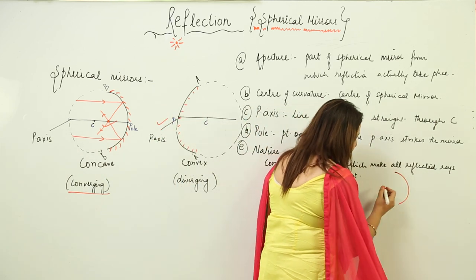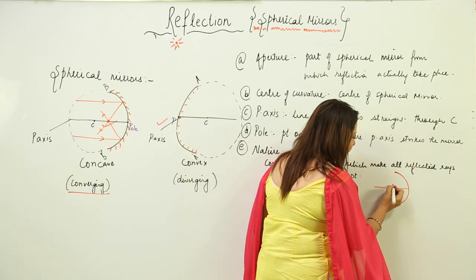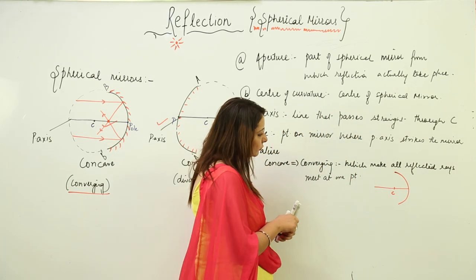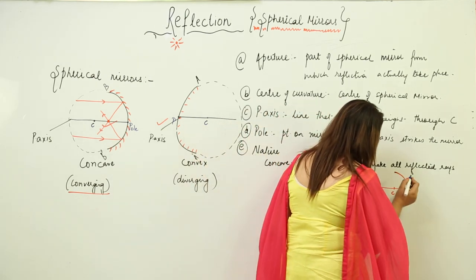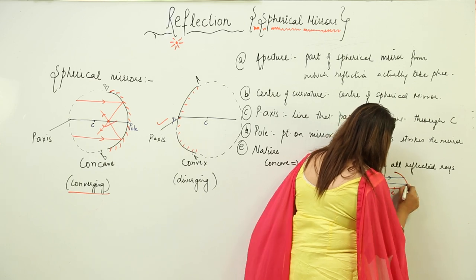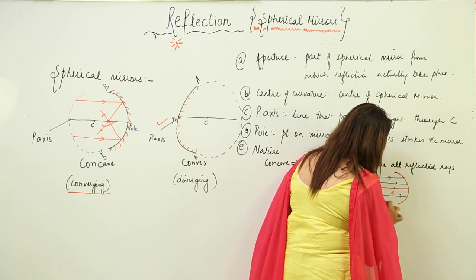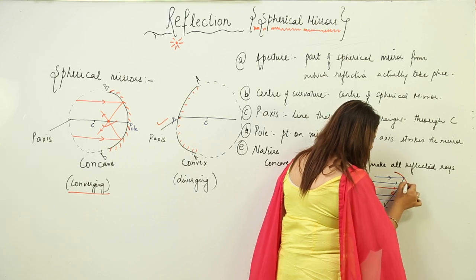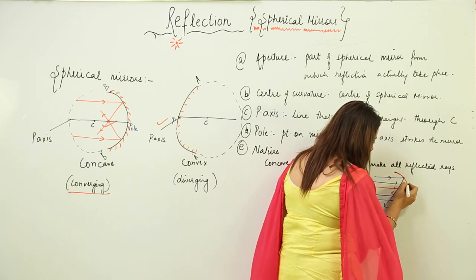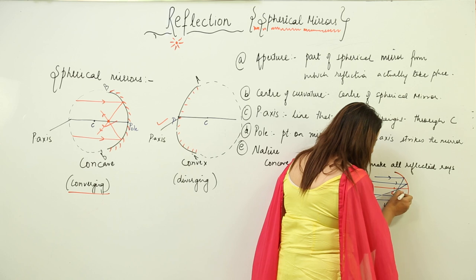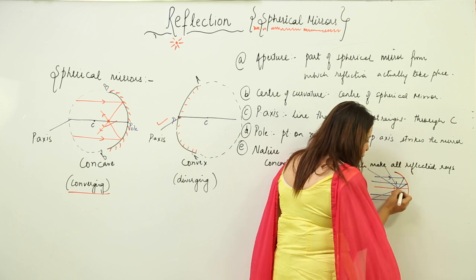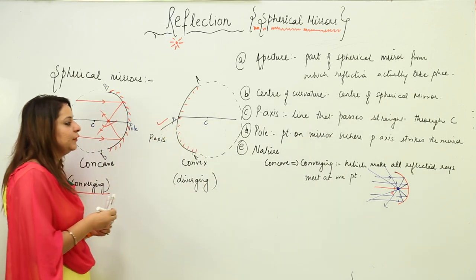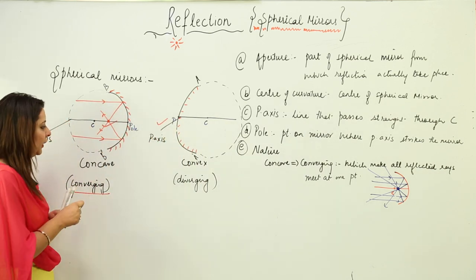To draw the figure: let this be your concave mirror with principal axis and center of curvature C. Draw many incident rays falling on the mirror — they will reflect and all converge to meet at one point. So all the reflected rays meet at one point, and that is why we call the concave mirror a converging mirror.